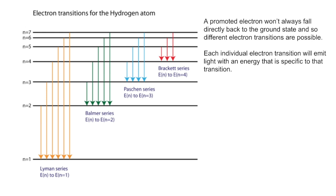However, it doesn't always fall straight back to the ground state — sometimes it happens in stages. For example, it might fall from energy level 5 to energy level 3 first, then from 3 to 2, and then from 2 to 1, back to the ground state for a hydrogen atom. The energy level it falls back to determines which series the transition belongs to: falling back to energy level 1 is the Lyman series; falling to level 2 is the Balmer series; level 3 is the Paschen series; and level 4 is the Brackett series. The difference between them is simply what energy level the electrons are falling back to.